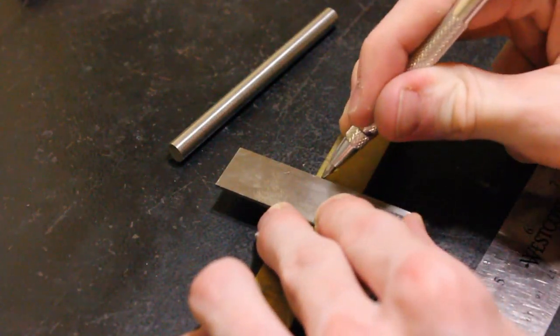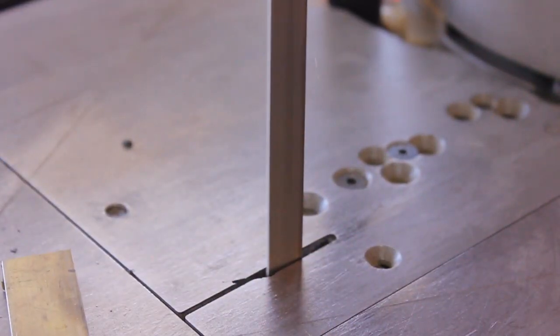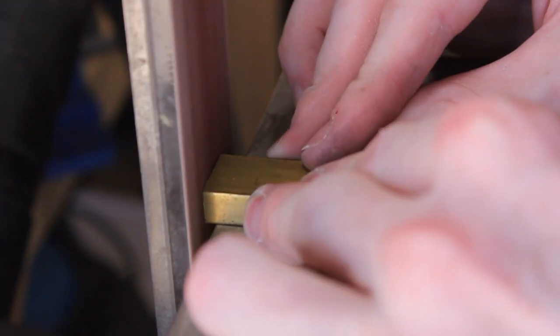So I'm going to be using a piece of brass for our base and then a stainless steel rod for our pillar, but just know that you can use a piece of stainless instead of brass here and it wouldn't make that big of a difference, or even aluminum.